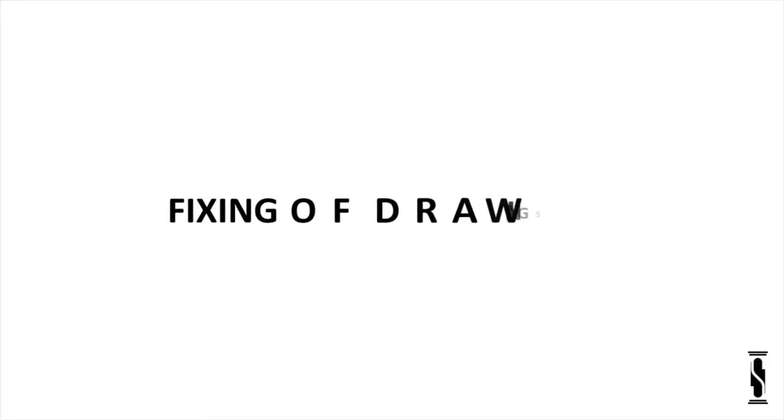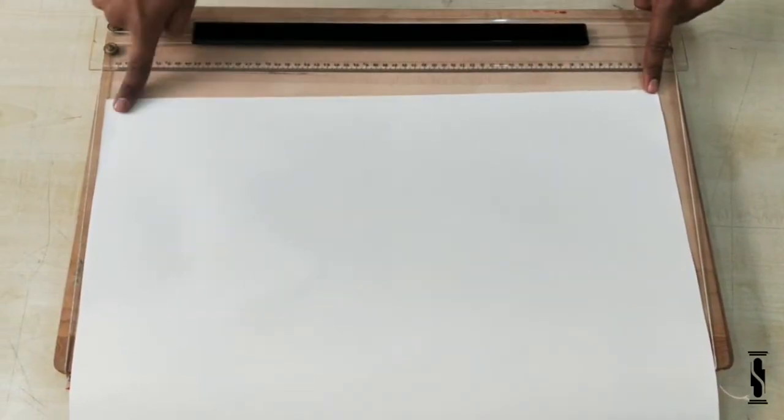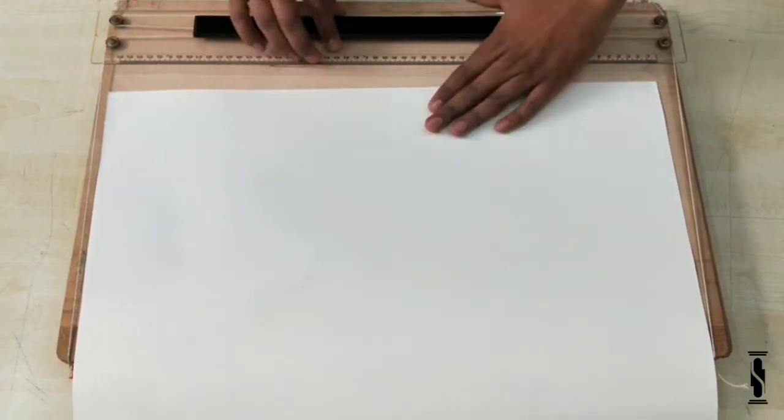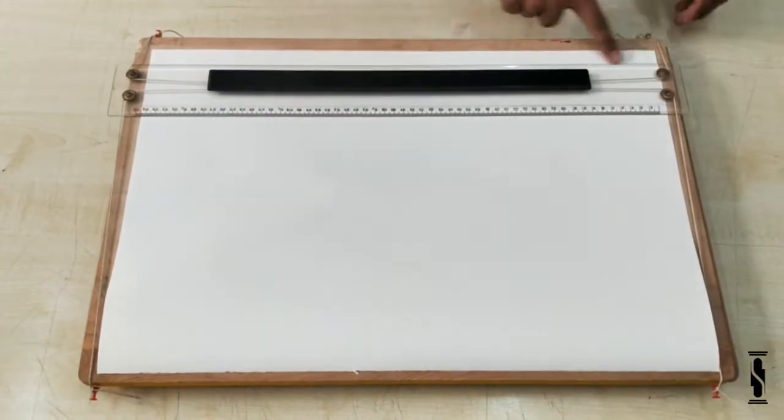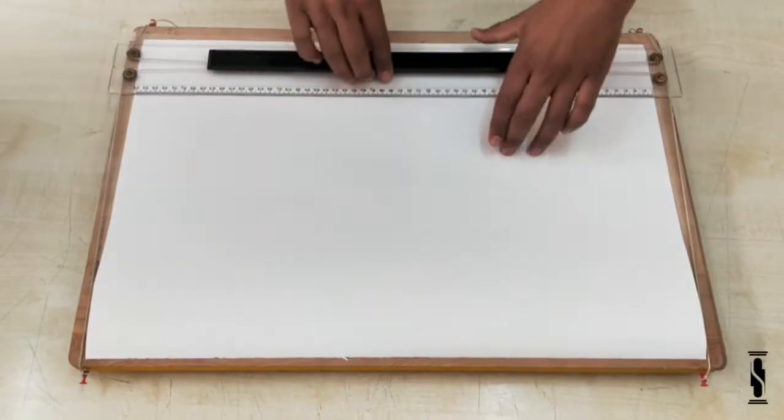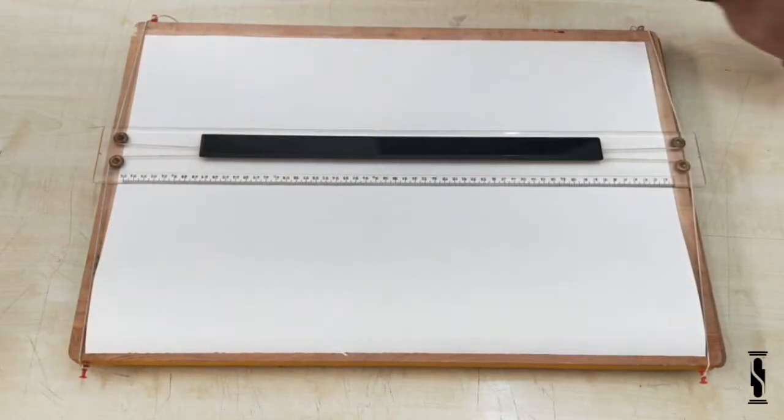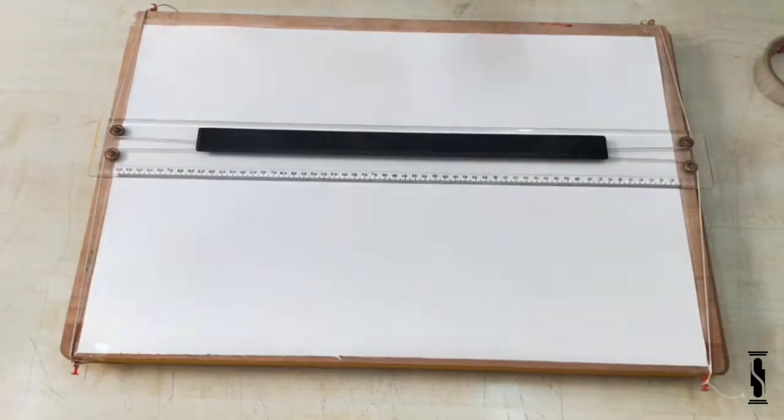Now, it's time to fix the drawing sheet. Put the drawing sheet under the parallel bar by keeping it straight, its edge parallel to the edge of the parallel bar. Make a little more adjustment. Once your sheet is in the right position, then fix it with the adhesive tape.